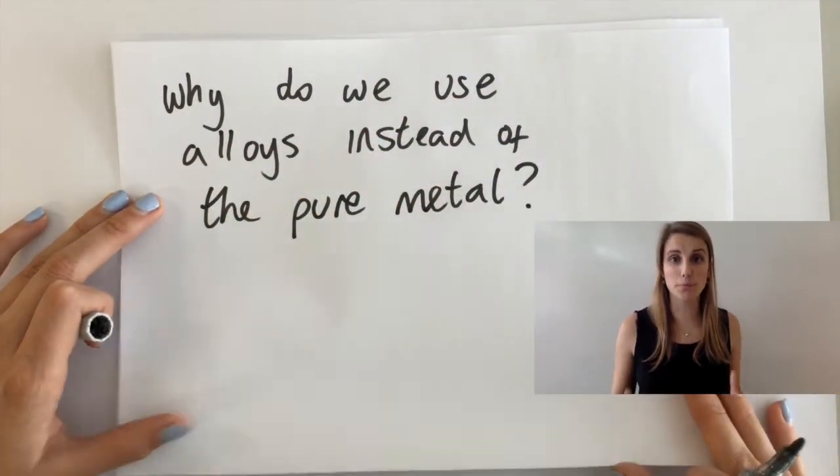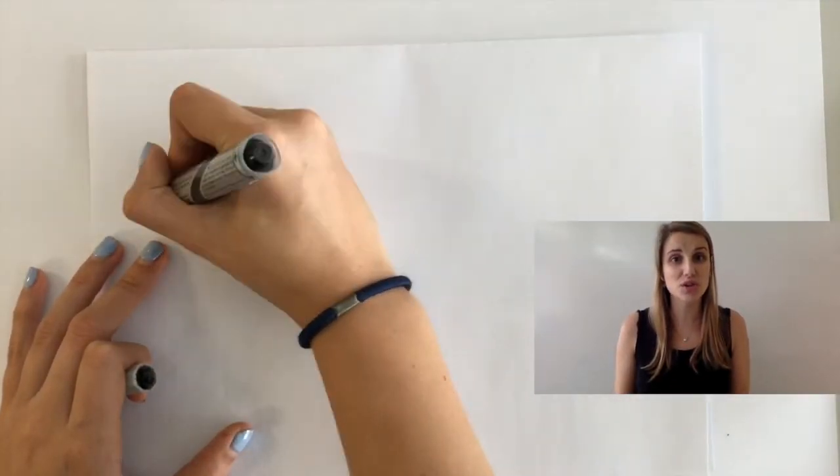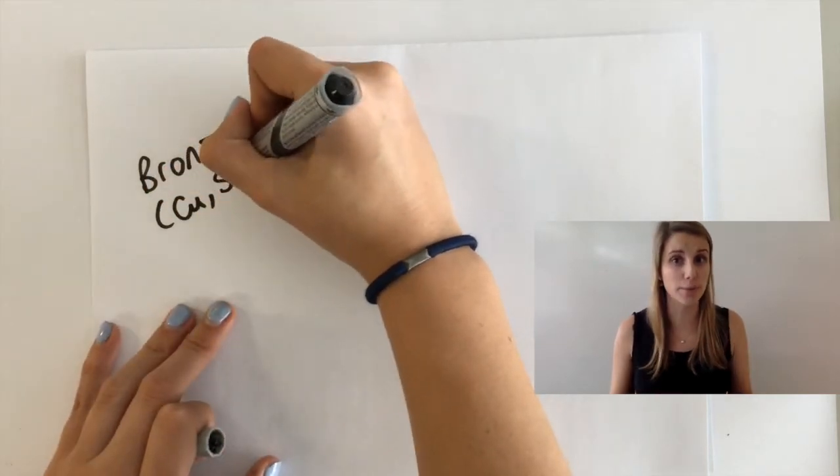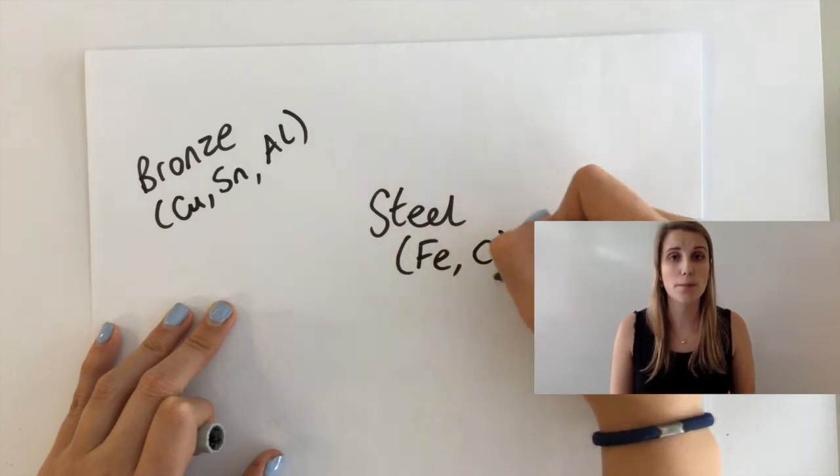For example, you've got bronze, which is a mixture of copper, tin, and aluminum. You've also got steel, which is super important and which is a mixture of iron and carbon blended together.